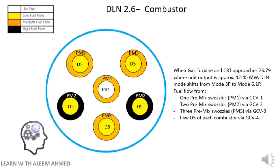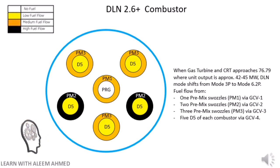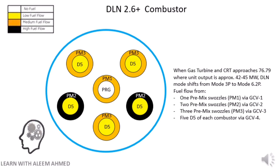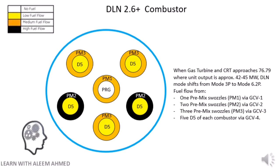When the gas turbine CRT approaches 76.79, where the unit output is approximately 42 to 45 megawatts, the DLN mode shifts from mode 3P to mode 6.2P. At this change, fuel will flow from 1 premix swazzle PM1 via GCV1, 2 premix swazzles PM2 via GCV2, 3 premix swazzles PM3 via GCV3, and 5 D5 diffusion circuits via GCV4.